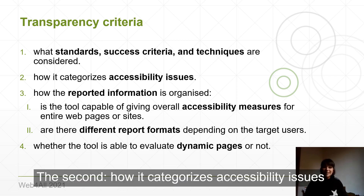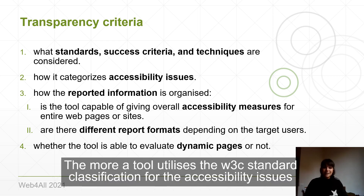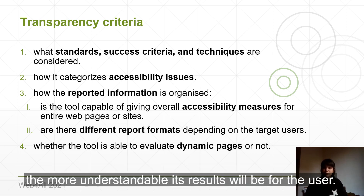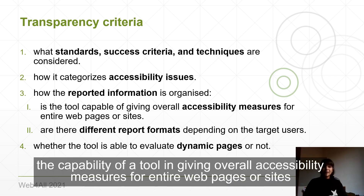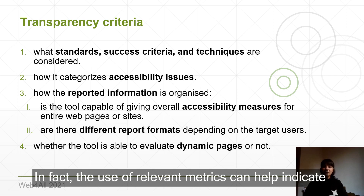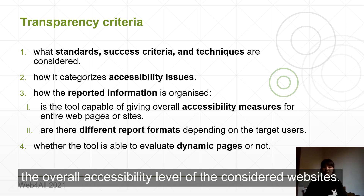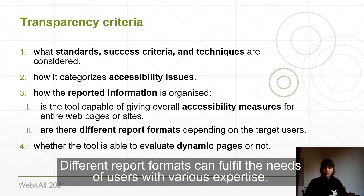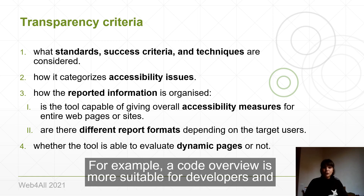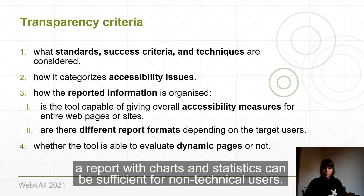The second is how the tool categorizes accessibility issues. The more a tool utilizes the W3C standard classification for accessibility issues, the more understandable its results will be for the user. The third is how the reported information is organized, in terms of the capability of a tool to give overall accessibility measures for entire webpages or sites. The use of relevant metrics can help indicate the overall accessibility level of the considered websites, and report formats should depend on the target users. Different report formats can fulfill the needs of users with various expertise — for example, a code overview is more suitable for developers, while a report with charts and statistics can be sufficient for non-technical users.